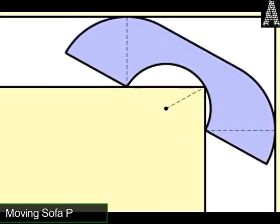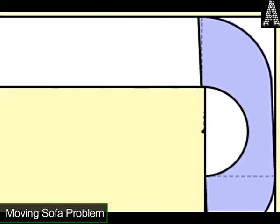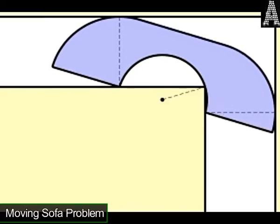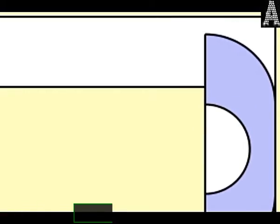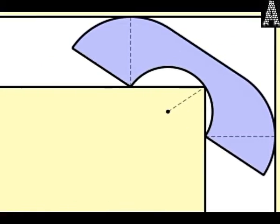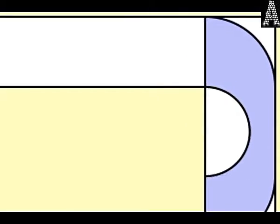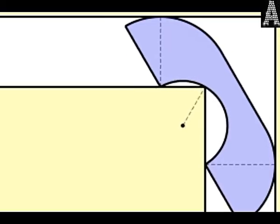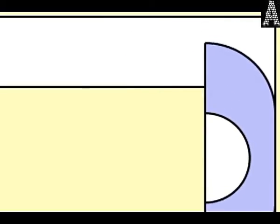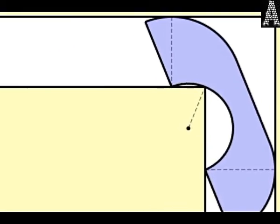Moving Sofa Problem. So you're moving into your new apartment, and you're trying to bring your sofa. The problem is, the hallway turns and you have to fit your sofa around a corner. If it's a small sofa, that might not be a problem, but a really big sofa is sure to get stuck. If you're a mathematician, you ask yourself, what's the largest sofa you could possibly fit around the corner? It doesn't have to be a rectangular sofa either, it can be any shape. This is the essence of the moving sofa problem.